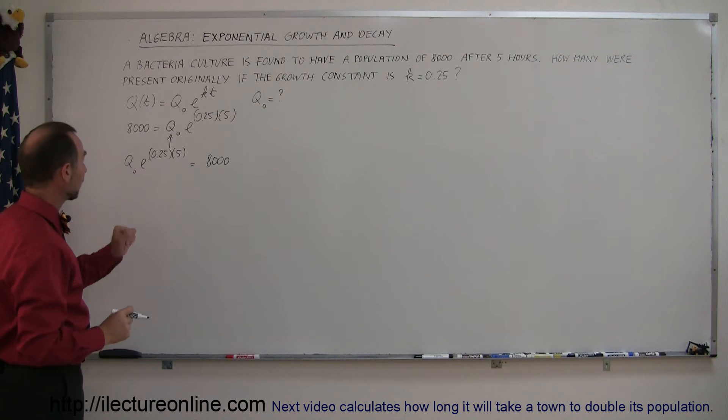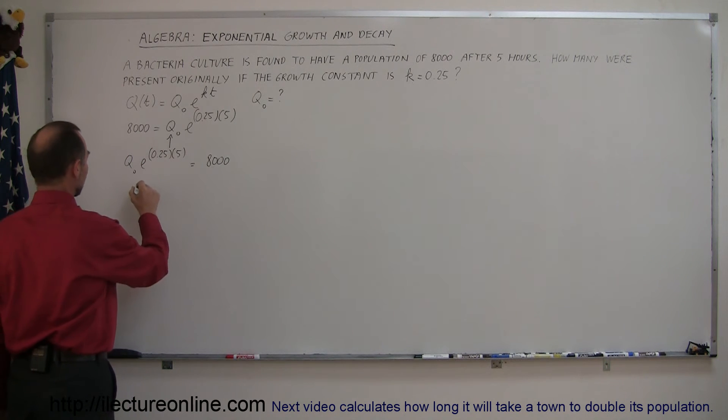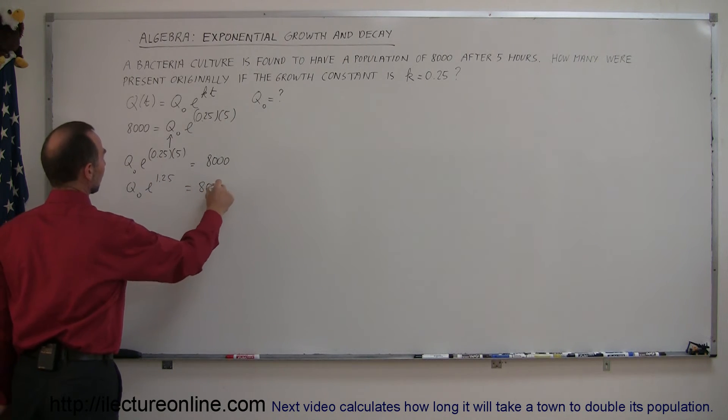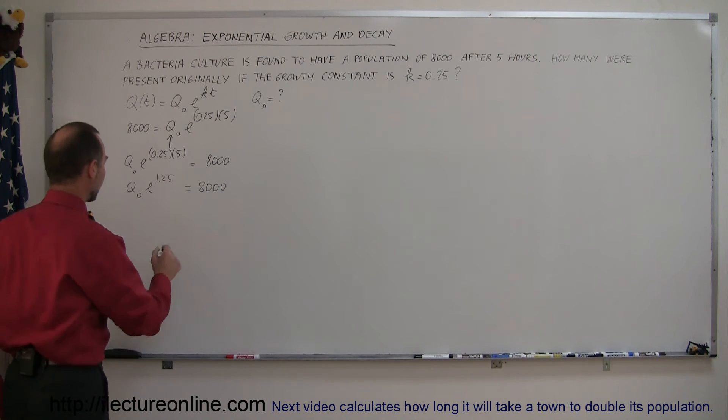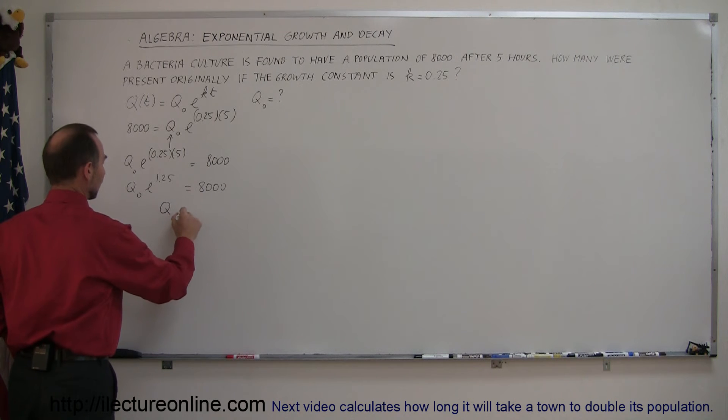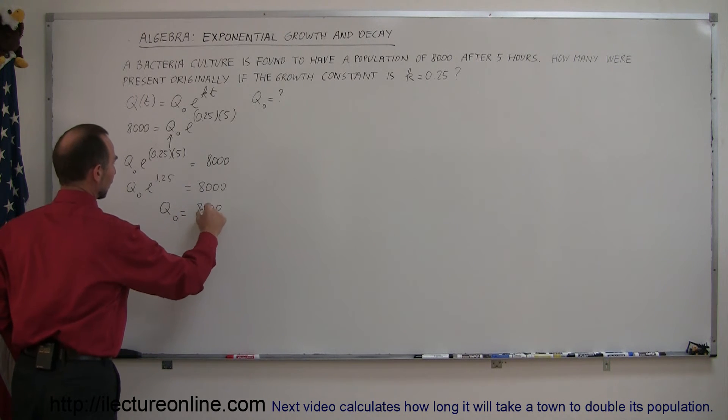Now let's multiply this out. So five times 0.25 is 1.25, so q sub nought times e to the 1.25 is equal to 8,000. Now we divide both sides by the coefficient of q sub nought, which is the e to the 1.25, so we have q sub nought is equal to 8,000 divided by e to the 1.25.